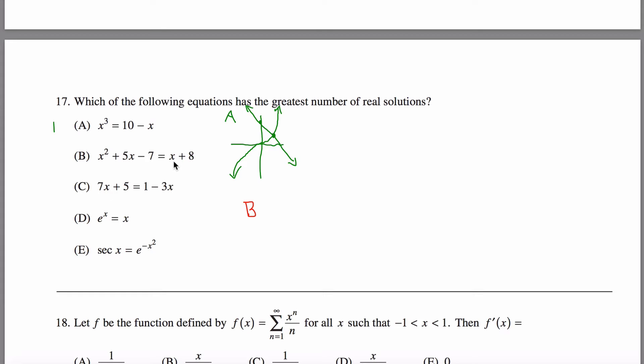So subtract x from both sides of the equation. I got x² + 4x, subtract eight from both sides of the equation, minus 15 equals zero.